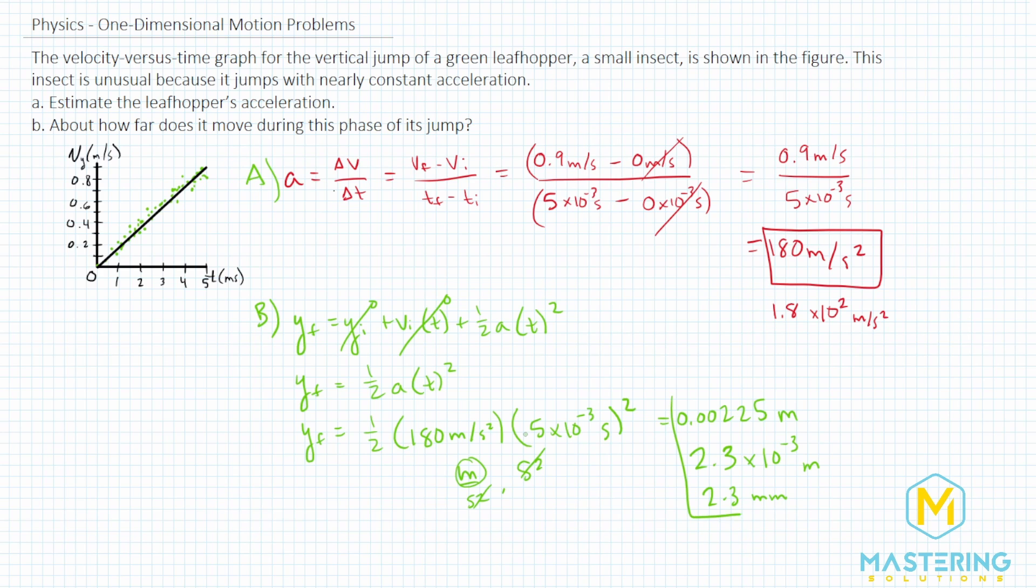So these are your answers. However they ask for it, it's all the same, either 0.00225 meters or 2.3 times 10 to the negative 3 meters or 2.3 millimeters. It's all saying the same thing, but you do need to make sure for Mastering Physics to put it in how they ask for it.